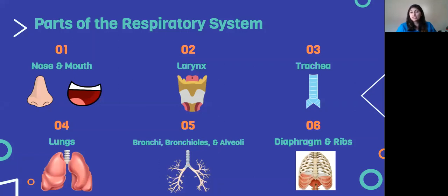First we'll talk about your nose and mouth. Then we'll go into the larynx, also known as your voice box, which is what lets you talk. After that we'll talk about the trachea, which is your windpipe, and it goes down through here. Then we'll talk about the lungs. After that we'll talk about the bronchi, bronchioles, and alveoli — most of you probably haven't heard of these, but they're actually within your lungs, and we'll go into more detail in the next lesson video. The last thing is the diaphragm and the ribs — the diaphragm is the muscle that helps you breathe, and the ribs surround your lungs.